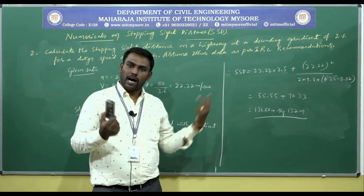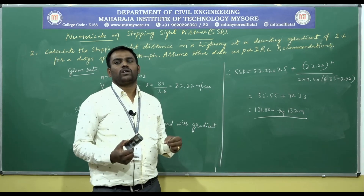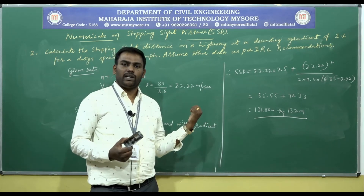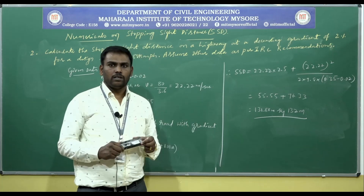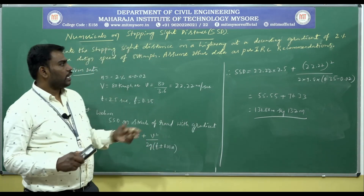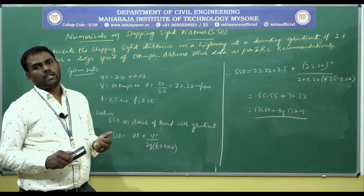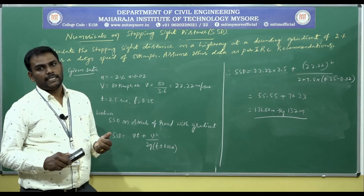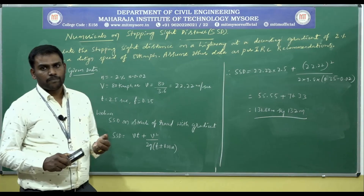We can easily find HSD and ISD using the stopping sight distance. This covers the numericals on stopping sight distance.